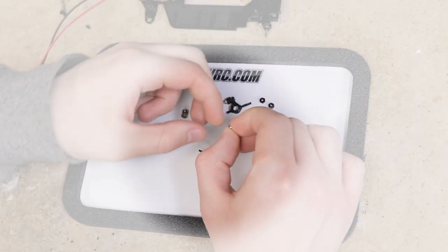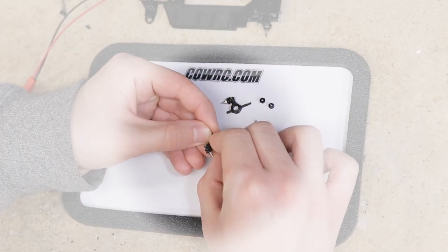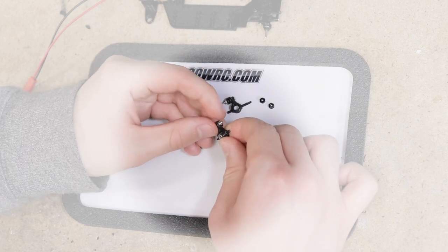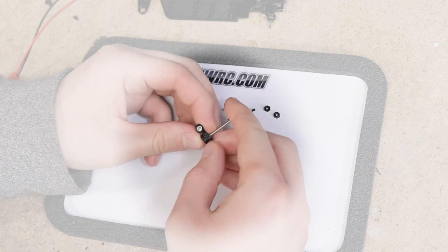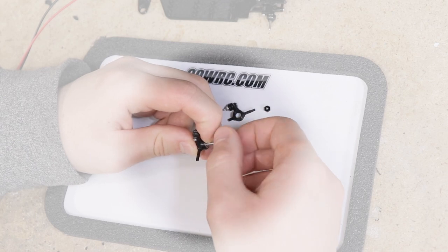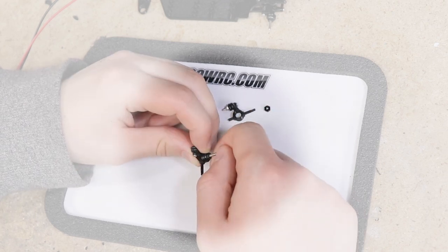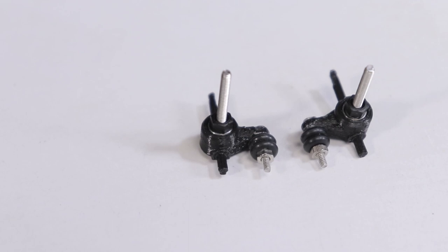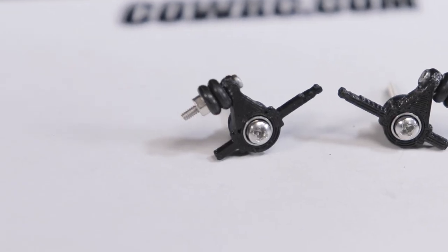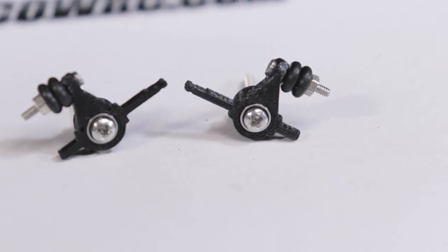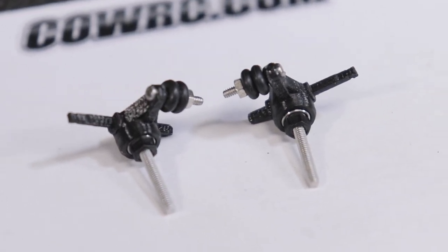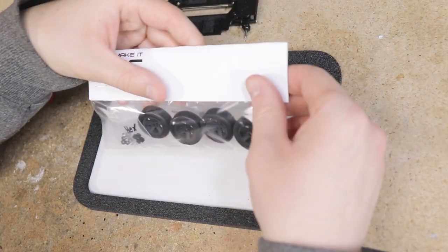Place two bearings in the openings on the front and back side of each knuckle, then slide the axle shafts through the center and thread on the hex wheel mount. Make sure the orientation of your knuckle is the same as mine.